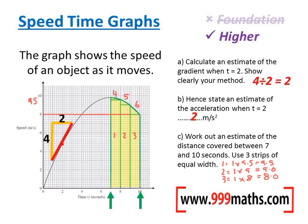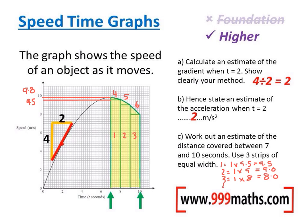Now I need to work out the areas of blocks 4, 5, and 6 — these are triangles. I'll do the same as before but halve my answer, because the area of a triangle is base times height then half. Block 4 has a base length of 1, and the height goes from 9.5 to 9.8, so the height is 0.3. Base 1, height 0.3, halved — that's 0.15.